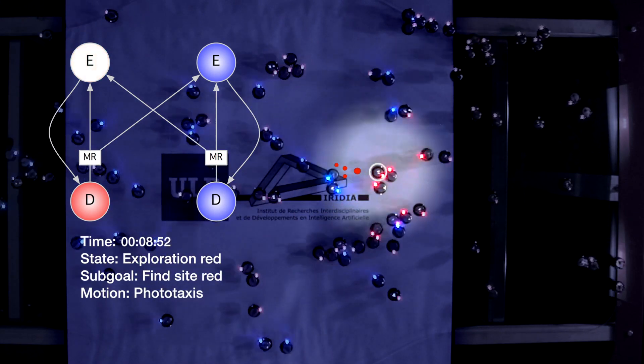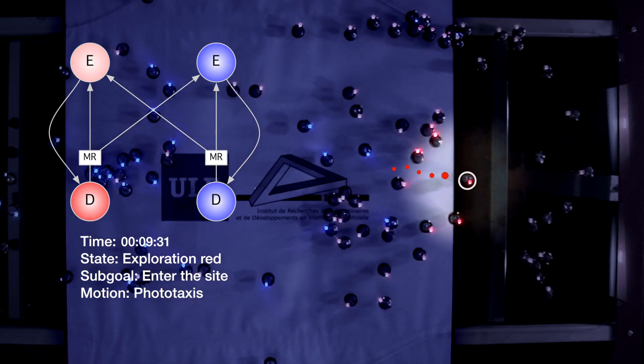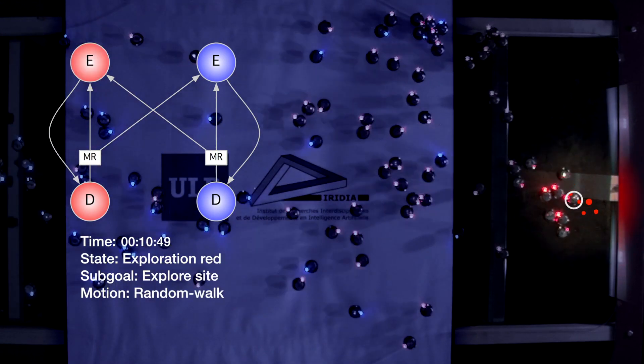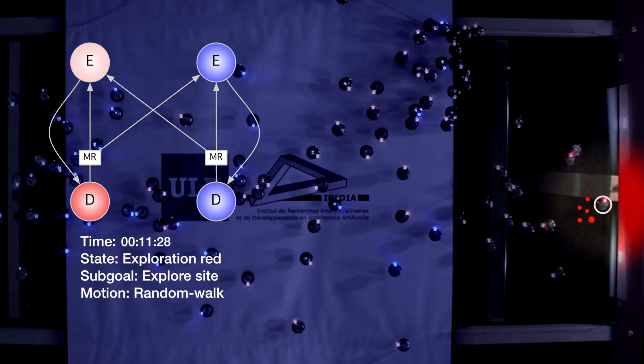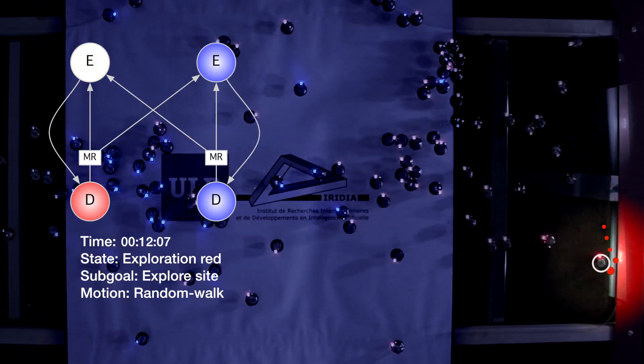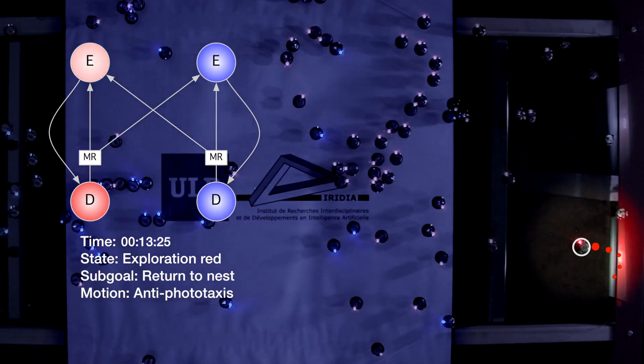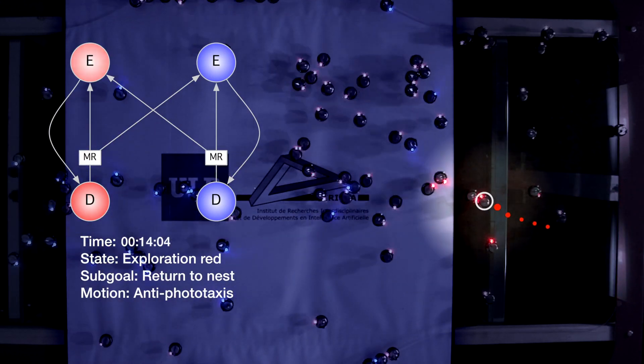In the exploration state, the robot travels towards the chosen site. Once there, it randomly explores the area in order to estimate the site quality. Eventually, the robot returns to the nest and re-enters the dissemination state.